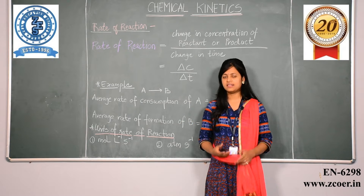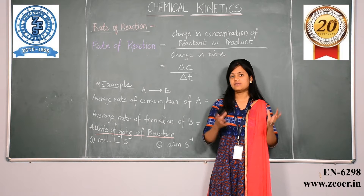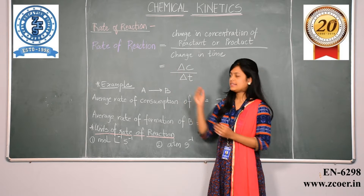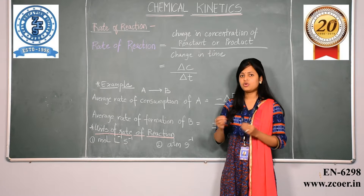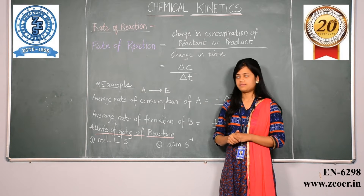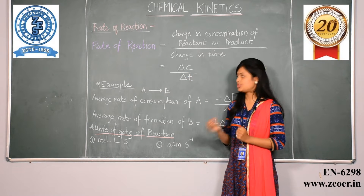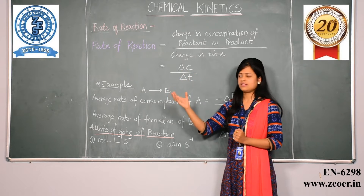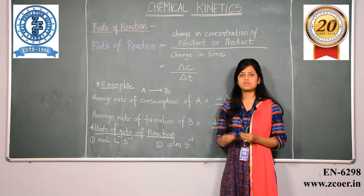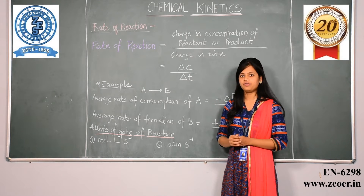In any particular reaction there can be two factors which are either reactants or products. Any reactant will combine together to form products. The rate of reaction can basically be defined as change in the concentration of reactant or the product per unit change in time, denoted as delta C divided by delta T, where delta means change in concentration divided by per unit time. This is the formula of rate of reaction.